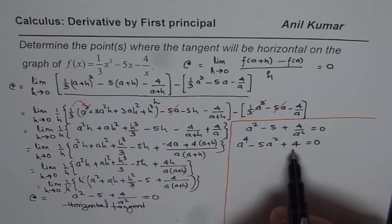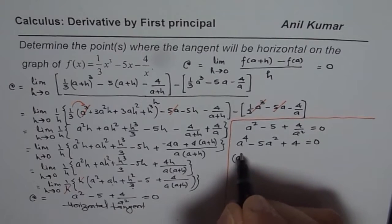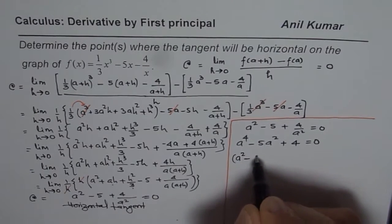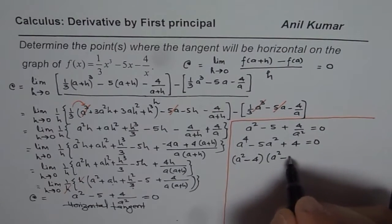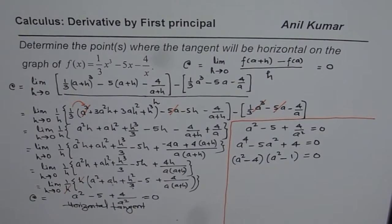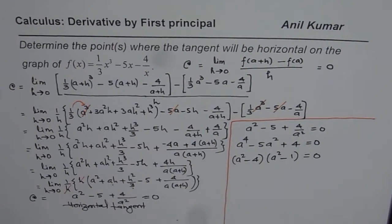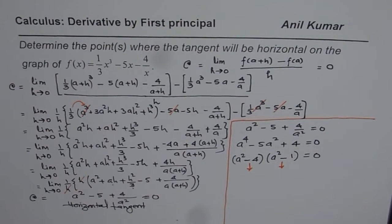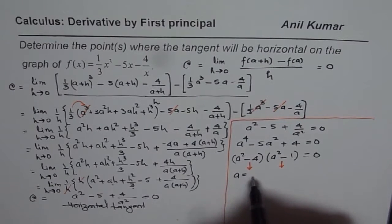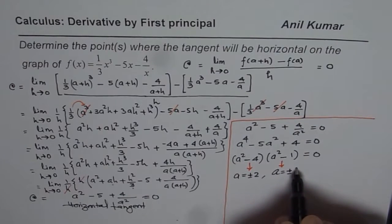We multiply through by a² to get: a⁴ - 5a² + 4 = 0. We can factor this: since 4 × 1 = 4 and -4 + (-1) = -5, we write (a² - 4)(a² - 1) = 0. This gives two pairs of solutions: a² - 4 = 0 leads to a = ±2, and a² - 1 = 0 leads to a = ±1. So all four points x = ±2, ±1 have horizontal tangents on the graph.